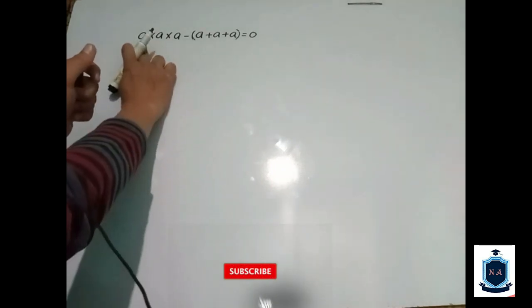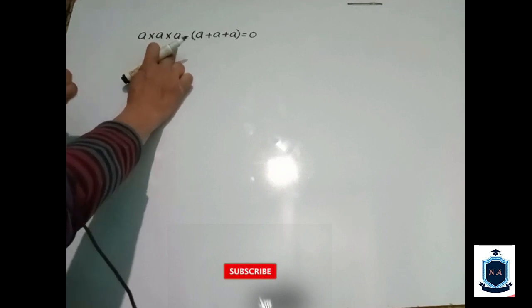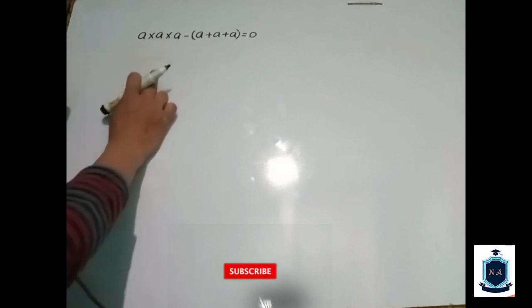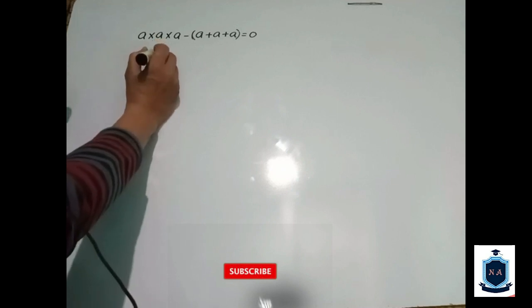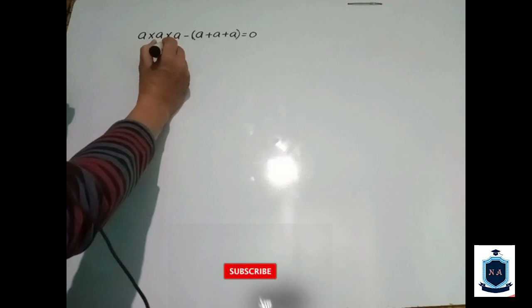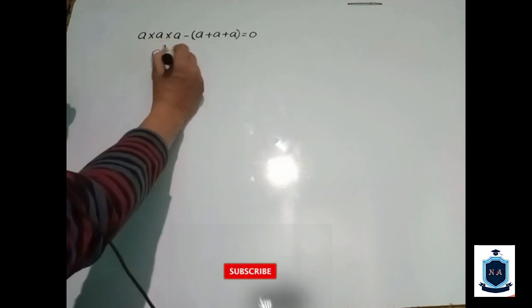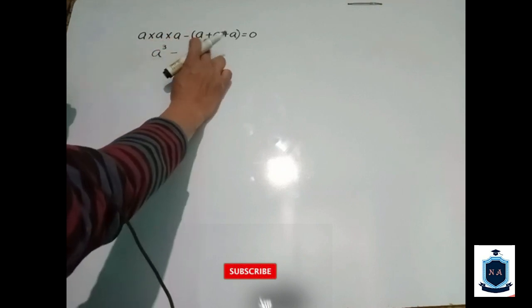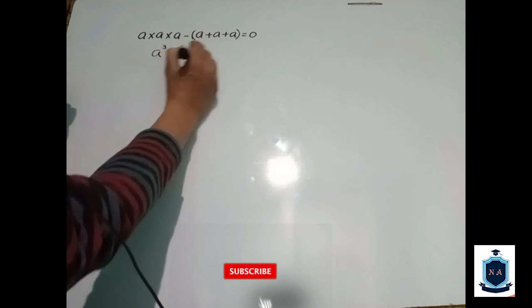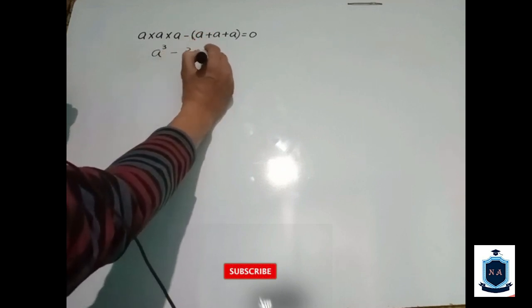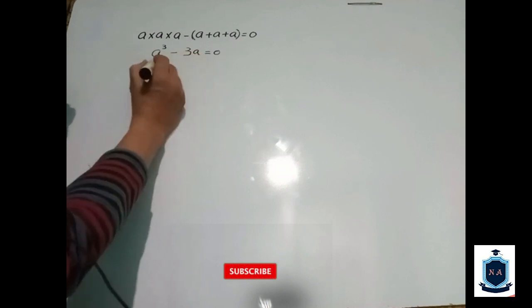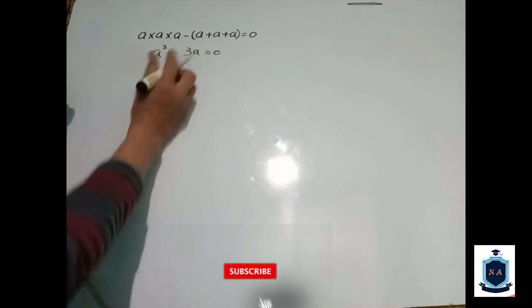If I transfer the value — the base is the same — the power would be here. You can see that a, the power is three. And you can see that a plus a plus a, which is equal to three a, equal to zero. Taking the common 'a' from both terms.